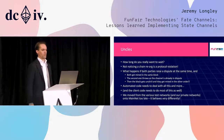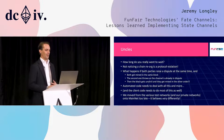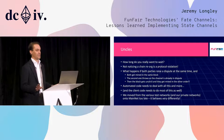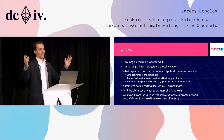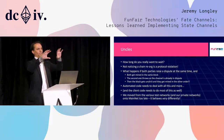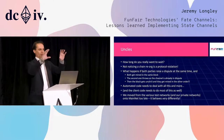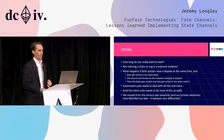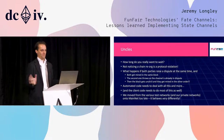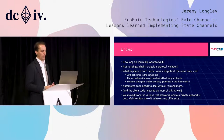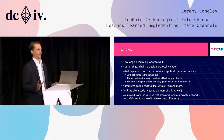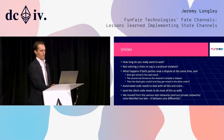On uncles and reorgs: not noticing a chain reorganisation is a protocol violation. You can have situations where both parties want to raise a dispute simultaneously, both do it in the same block, one gets mined before the other — then a chain reorg happens and they occur in the other order. Automated code must spot that and react correctly. The client code needs to handle this too. We moved to mainnet from testnets way too late — mainnet is very different from any testnet, so if you're doing anything automated on the blockchain, get on mainnet as soon as you can.